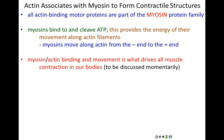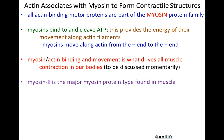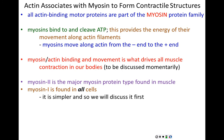Myosins always move in a polar direction along actin from the minus end towards the plus end, and it is the myosin-actin binding and movement that drives all muscle contraction in our body. Myosin protein 2 is the major myosin type found in muscle cells, whereas myosin protein 1 is found in all cells. Every single cell must be able to move — not every cell needs to contract, but every cell has to have the ability to crawl, move, and change its shape, so all cells contain myosin 1.